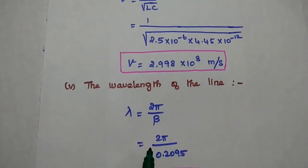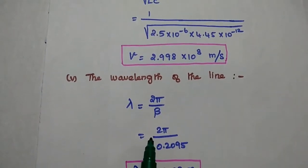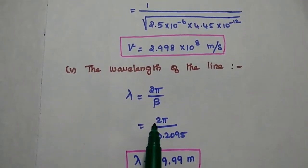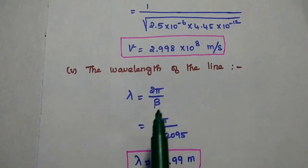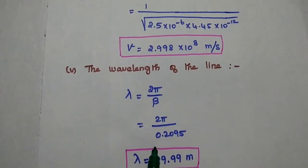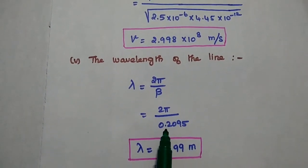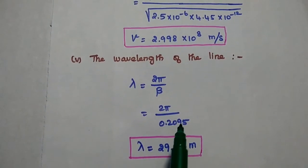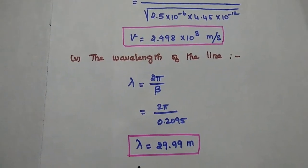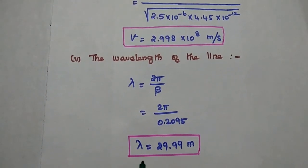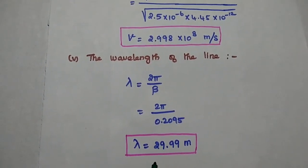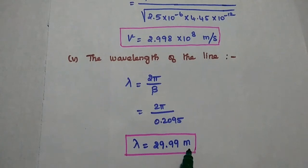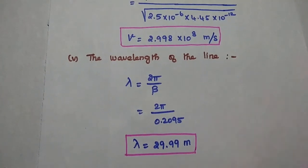The last one is the wavelength of the line: lambda is equal to 2 pi by beta. The value of beta is 0.2095. Substituting that value, the lambda value is equal to 29.99 meters.